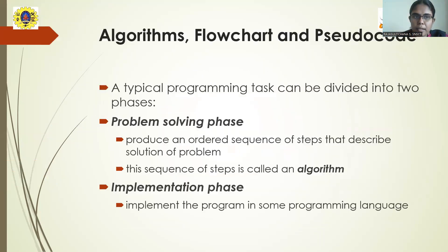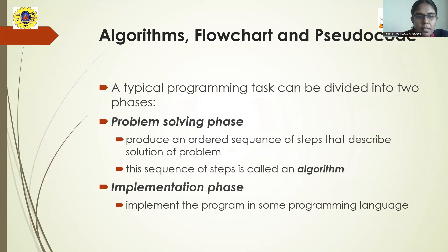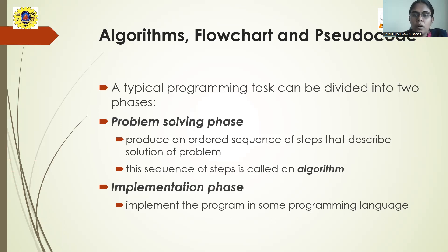Hope everyone is clear about how to write the algorithm and flowchart. Let me give you a quick recap. Algorithm is nothing but a set of instructions which are used for describing the solution to a given problem, and flowchart is a pictorial representation of an algorithm.